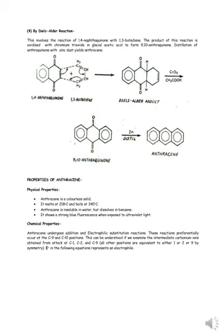Properties of anthracene — physical properties: anthracene is a colorless solid. It melts at 280°C and boils at 340°C. Anthracene is insoluble in water but dissolves in benzene. It shows a strong blue fluorescence when exposed to ultraviolet light.